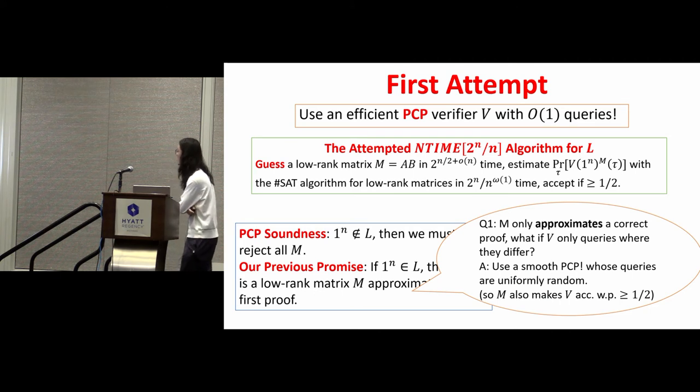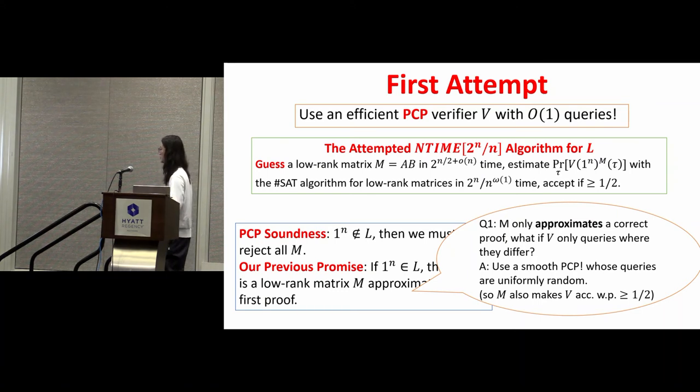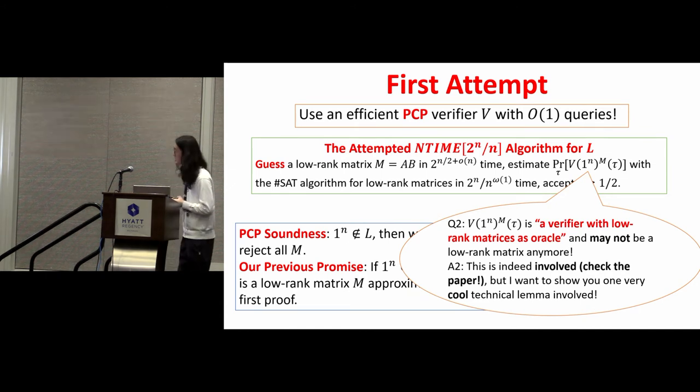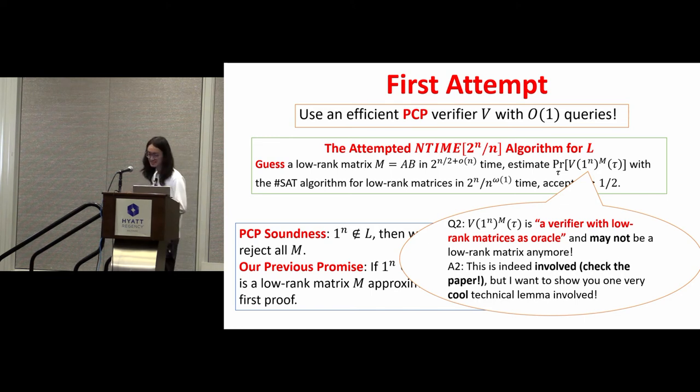But the problem is that M only approximates a correct proof. So what if we only query where they differ? In that case, we can still think that M is wrong and reject it. The catch here is that we can use smooth PCP, which will query all positions in the proofs uniformly at random. Therefore, M only differs by a small constant fraction from a correct proof. M will still make V accept with high probability because in most cases V will query correct positions. The second issue is more serious, because V with M, without V to the M, is actually a verifier with low rank matrix as oracle. It may not be a low rank matrix itself. So to solve this question, we actually needed many involved technical details. You can check the paper, but I do want to show you one very cool technique in the proof.